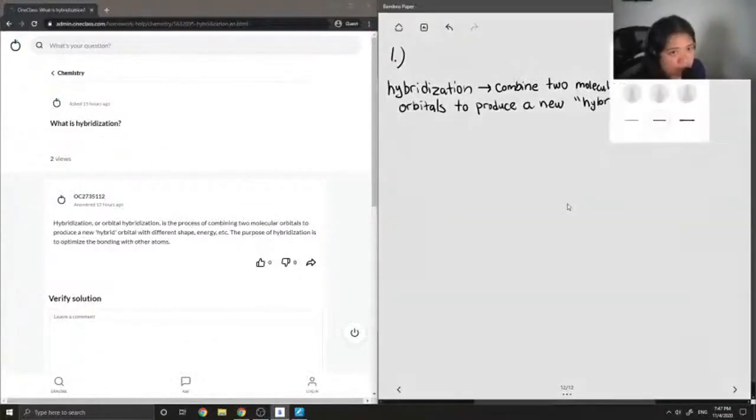So first let me give an example of just normal methane. If you were to write out this molecule you have just a carbon and attached to it are four hydrogens that are all equivalent. If we didn't have hybridization then its molecular orbital diagram would look like the following.